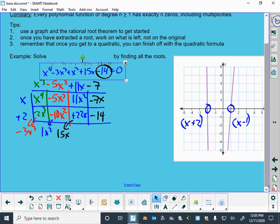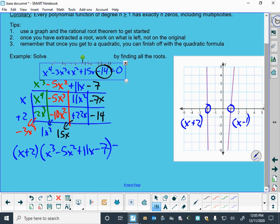So far now, I've used my graph to help me figure out that this factors into an x plus 2 times an x cubed minus 5x squared plus 11x minus 7 equals 0.